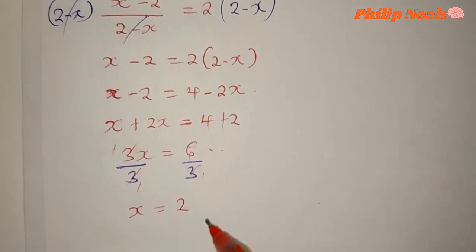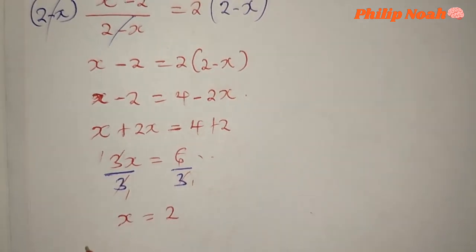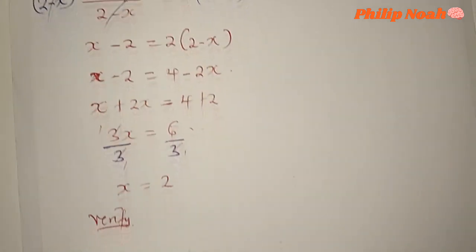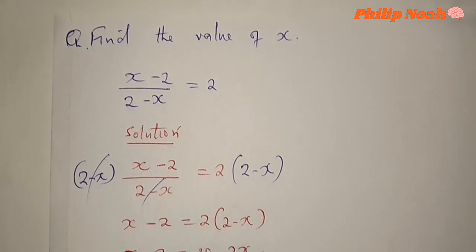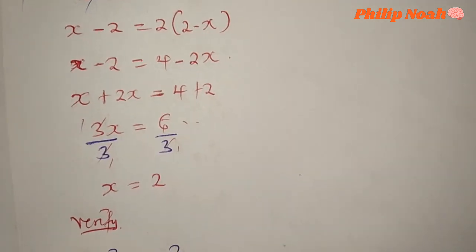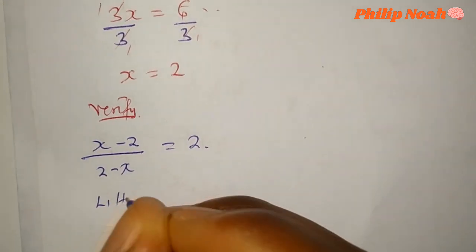So we have gotten our answer as 2, but is it true? Let's verify and see. Our equation was x minus 2 over 2 minus x equals 2. Let's see the left hand side of the equation.